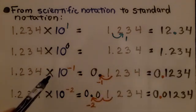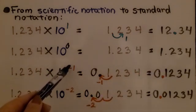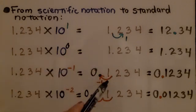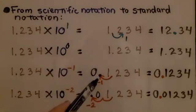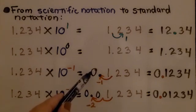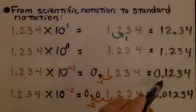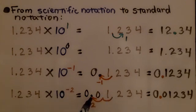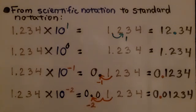Here we're raising 10 to the negative first power. Instead of moving to the right, we're going to move the decimal point to the left — that's the negative 1 — and we're going to have to use a zero as a placeholder. So we have 0.1234. When we raise 10 to the negative second power, we go two jumps to the left and use two zeros as placeholders, giving us 0.01234.